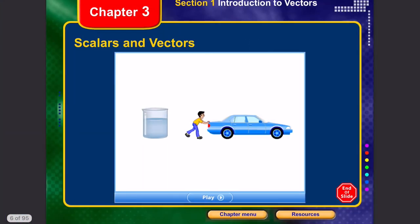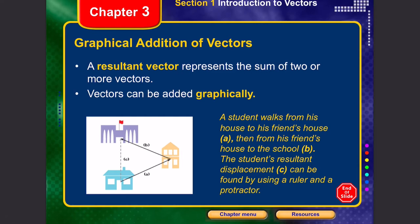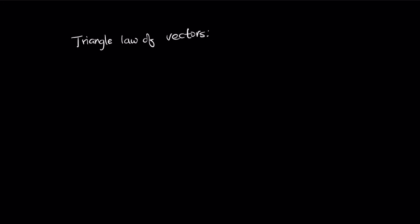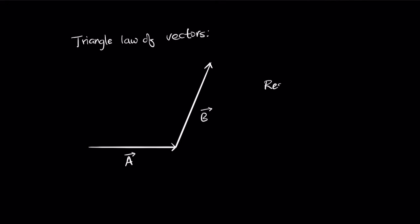Let's start with the graphical addition of vectors. When adding vectors graphically, we use what we call the triangle law of vectors. The triangle law states that if two sides of a triangle represent two vectors, then the third closing side represents the resultant. For example, if the first vector is A-bar and the second vector is B-bar, the resultant represents the addition A-bar plus B-bar.